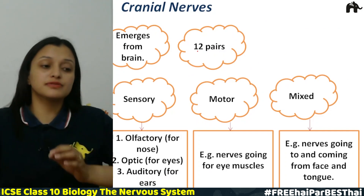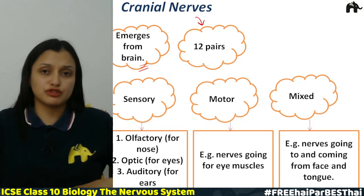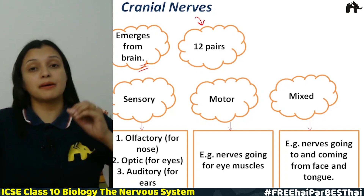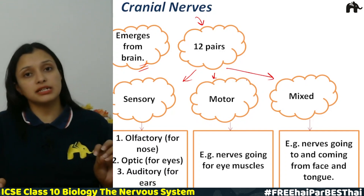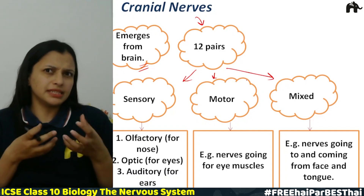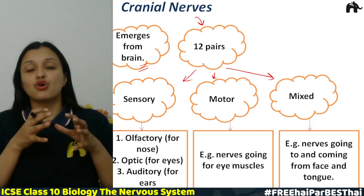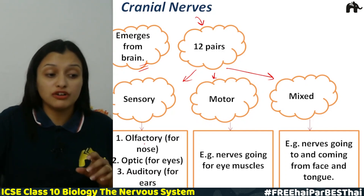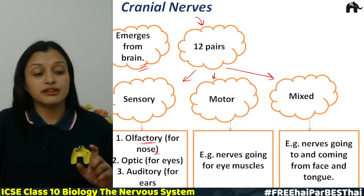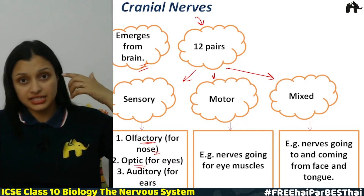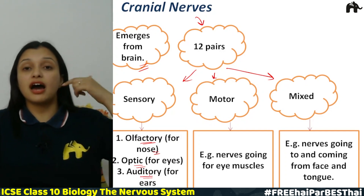Cranial nerves arise from the brain and there are 12 pairs. Out of those 12 pairs, some are sensory, some are motor, and some are mixed. Sensory cranial nerves arise from sense organs like skin, nose, ears, and eyes. Examples include olfactory nerves for smell, optic nerves for vision, and auditory nerves for hearing.